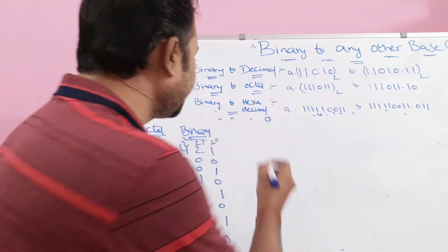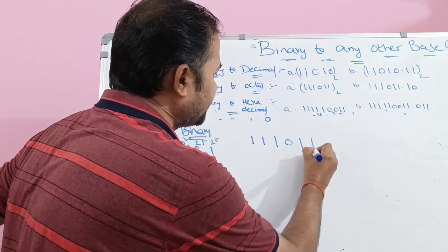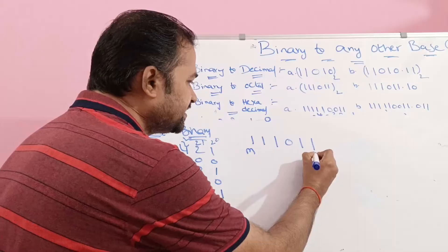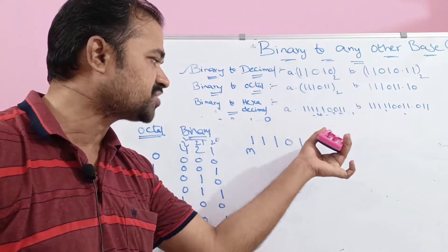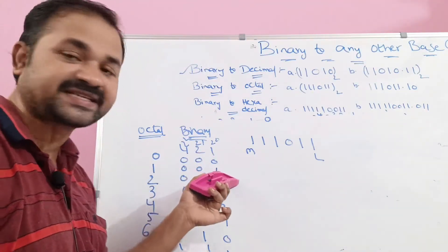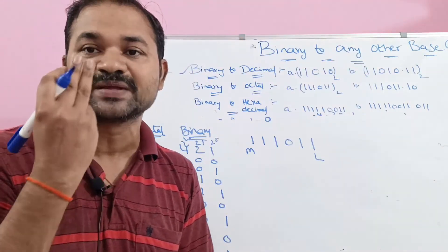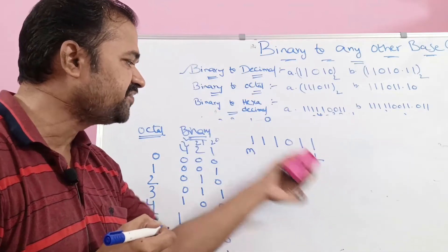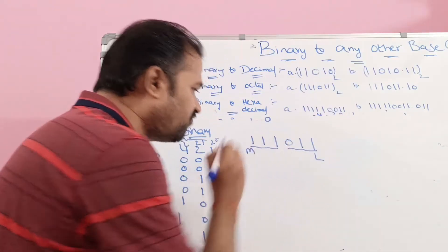First example: binary number 1110011. This is the MSB on the left, LSB on the right. We group 3 bits from right to left (LSB to MSB): the rightmost group is 011, the next group is 110, and the leftmost group is 001.